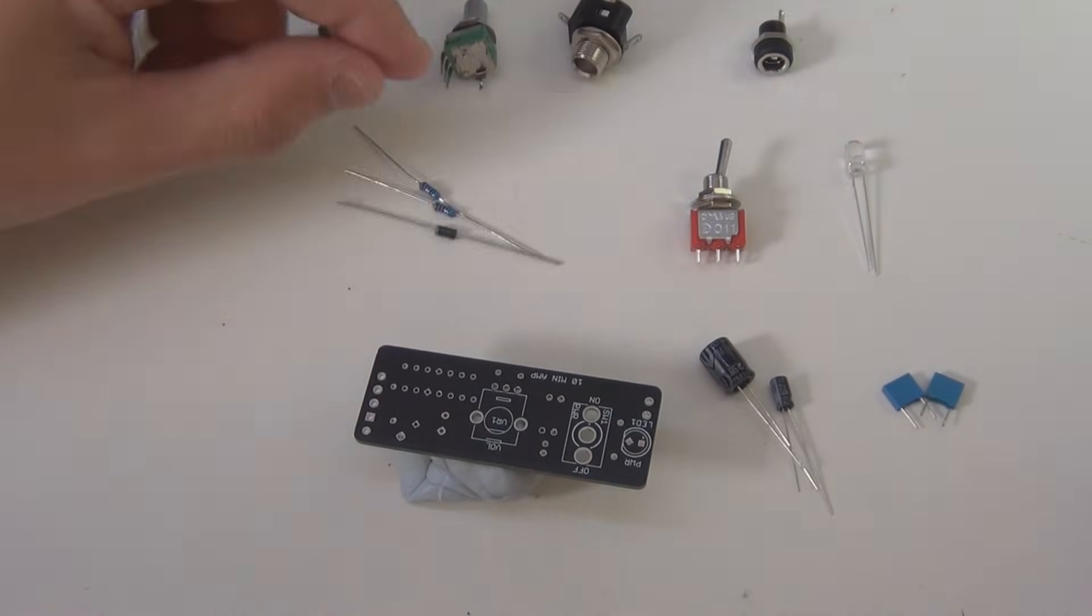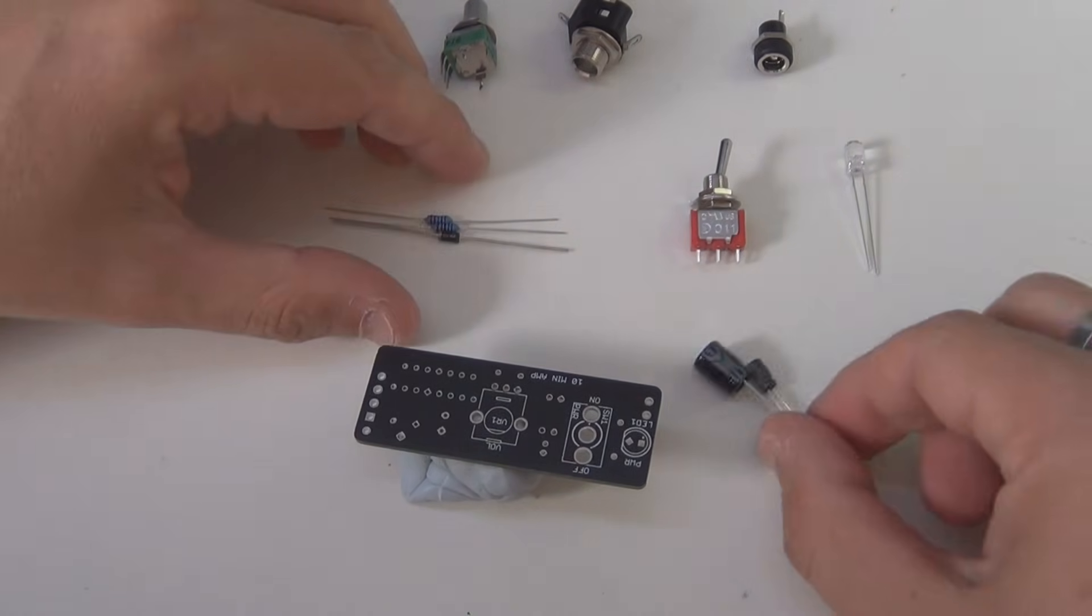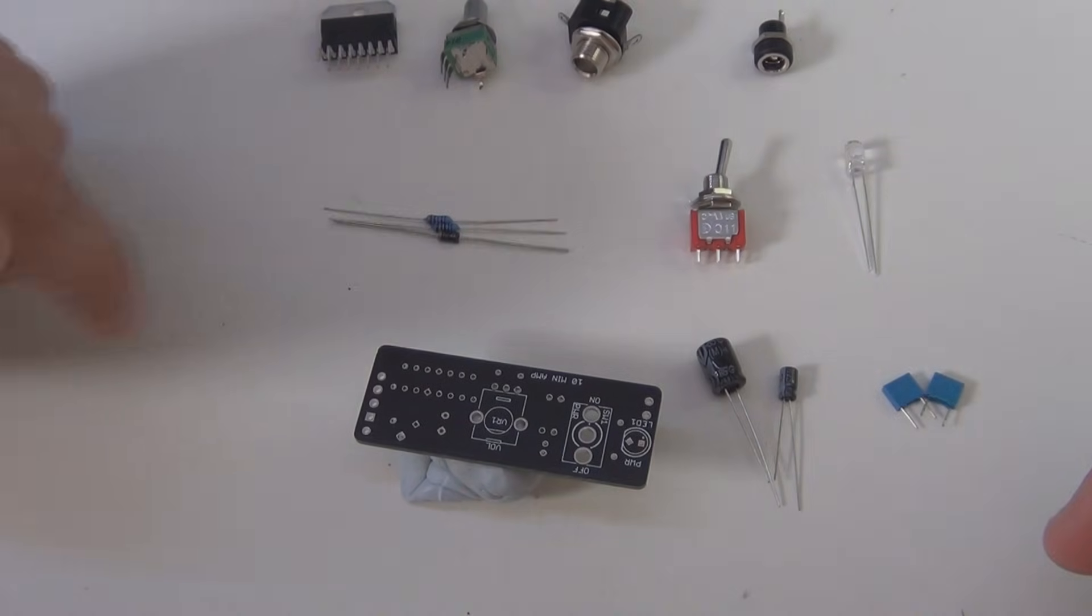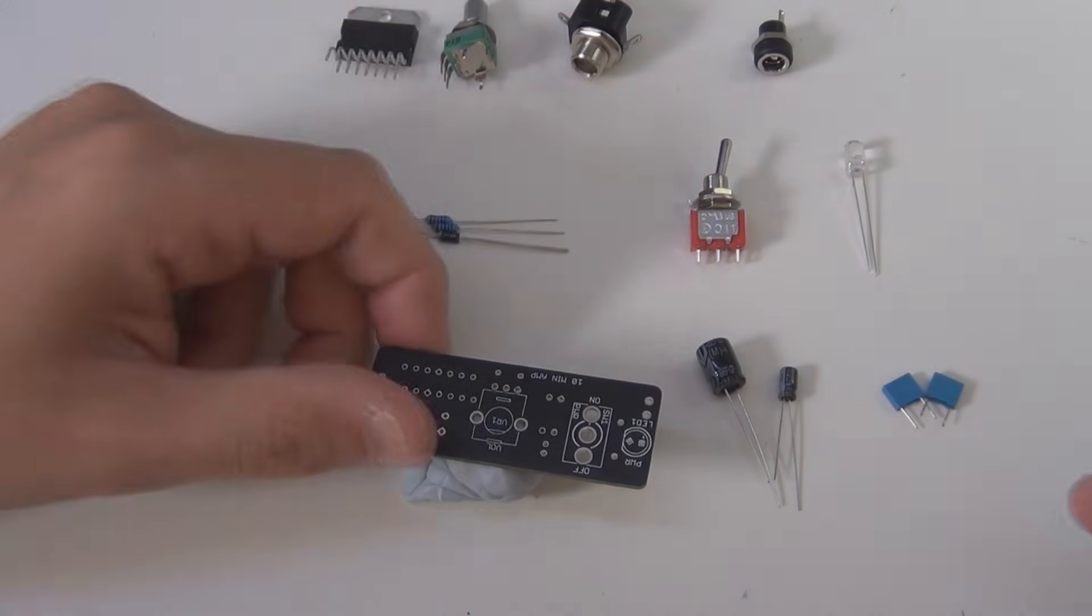So let's start with the smallest components, all the passives, so the capacitors, the electrolytic capacitors, film capacitors and resistors and diode. If you follow this method that I'm doing, you'll find it's probably a little bit easier. So let's start with those.